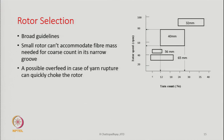The broad guidelines for selection are: a small rotor cannot accommodate the fiber mass needed for coarse count in its narrow groove. When the fiber mass is more — when you try to spin coarse count — you will have more fibers in the cross section of the yarn, which will also be in the groove of the rotor. So a small rotor with narrow grooves cannot accommodate a large number of fibers.